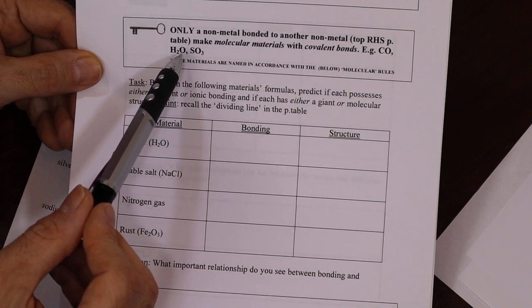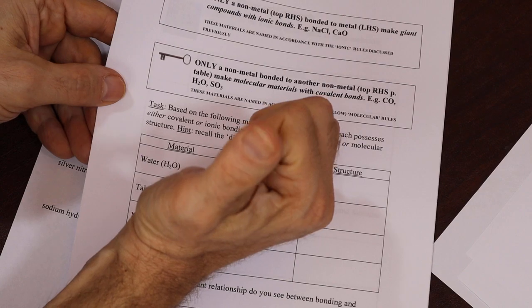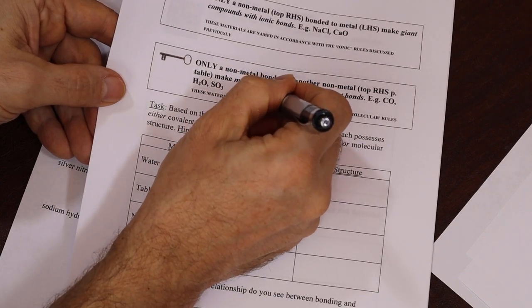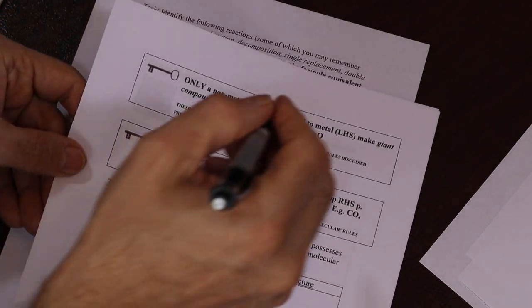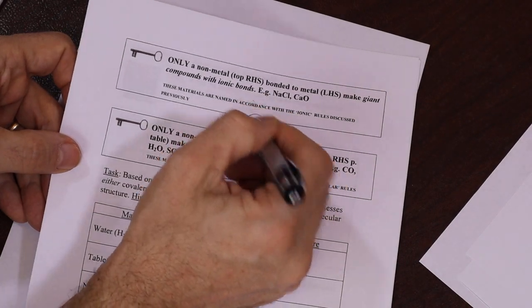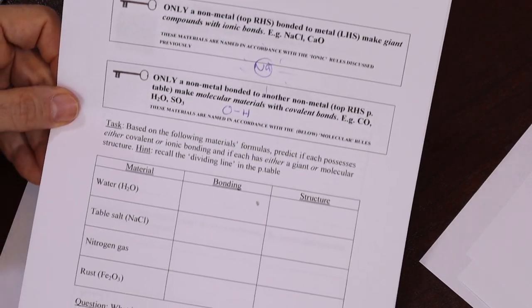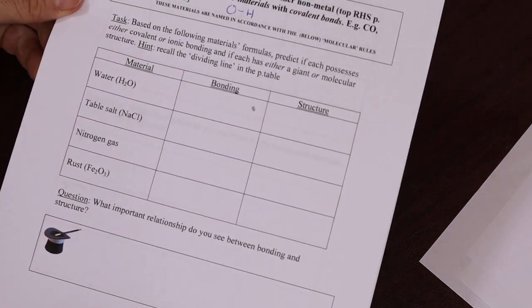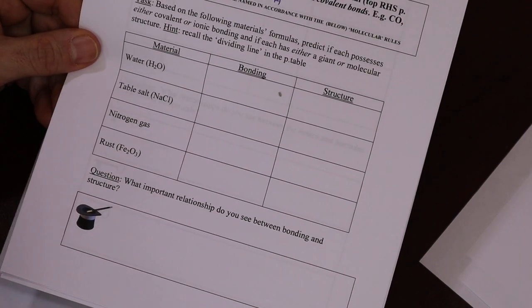So for example, in water, which we'll show you in a minute, it's like H and O are holding hands. But in sodium chloride, Na+ radiates its attractiveness in all directions, so it can bond in any direction. Okay, so let's look now at this table I think we've seen before, but we'll go through it based on the following materials' formula. Predict if they're either ionic or covalent and therefore the structure.